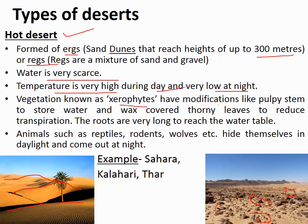Vegetation in hot deserts has physiological, chemical, and biological modifications to store water and minimize evaporation rate. Leaves are wax-covered to reduce the rate of evaporation, and roots are very long to reach the water table, because the water table in the desert ecosystem is very far below the ground.